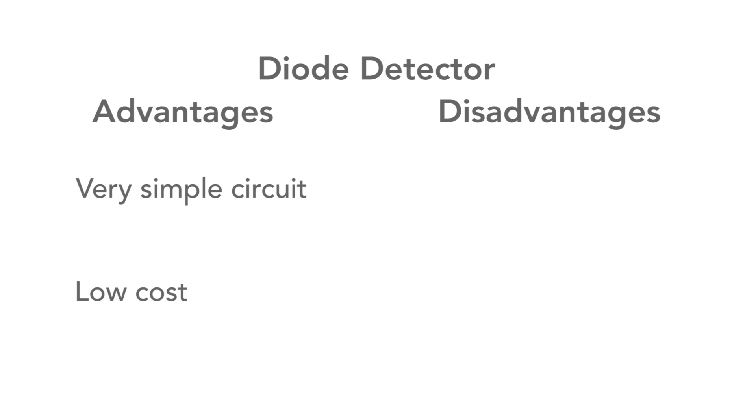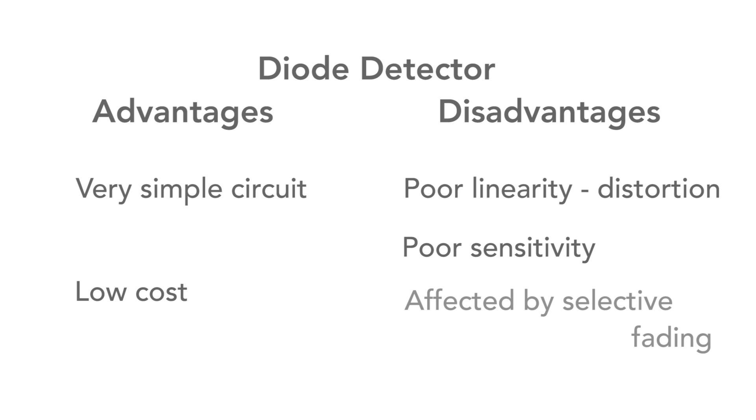But it also has some disadvantages. It's not very linear because of the characteristic of the diode and this introduces distortion. The detector is not particularly sensitive and needs relatively large signals to operate as a result of the diode turn-on voltage. It's also prone to the effects of selective fading. This is the distortion that's often heard on short wave bands as signals fade in and out.